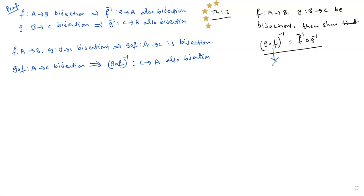LHS mapping: the LHS mapping is C→A. For equality of functions, first check the mapping. G circle F whole inverse is equal to F inverse circle G inverse. What is G circle F whole inverse mapping? That is C→A. F inverse circle G inverse also maps C→A.